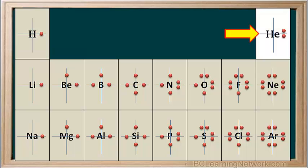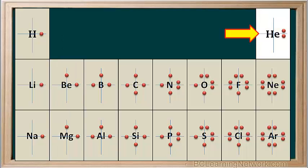Now we'll consider helium. Even though helium has two valence electrons, it is not like the elements in group 2, such as beryllium and magnesium. In group 2 elements, the two valence electrons are not paired, whereas in helium, the two valence electrons are paired. Helium doesn't have a stable octet like the other group 18 elements, because helium only has two electrons. However, its electron arrangement is still stable, since it's a noble gas.